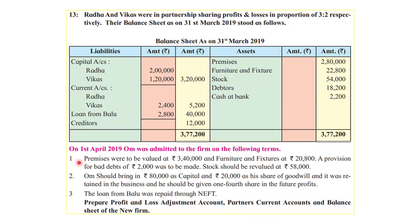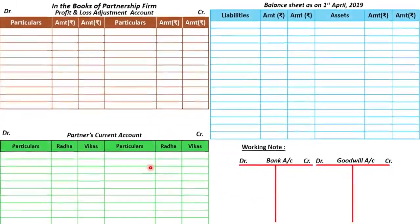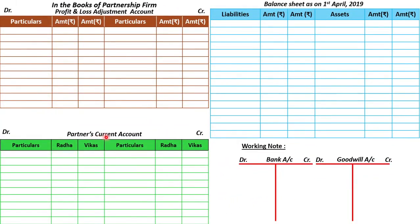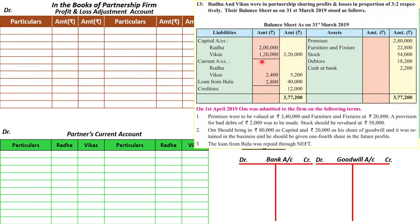Radha and Vikas admitted Om on 1st April 2019; he was admitted to the firm on the following terms. Let's prepare as instructed. In the partners' current account, only the old partners — Radha and Vikas — will have a current account. Now let's start the posting of items from the given balance sheet for the accounts we have drawn. From liabilities, Radha's and Vikas's current account balances — 2,400 and 2,800 rupees — will go to the credit side of the current account. And bank balance of 2,200 rupees will come to the debit side of the bank account.